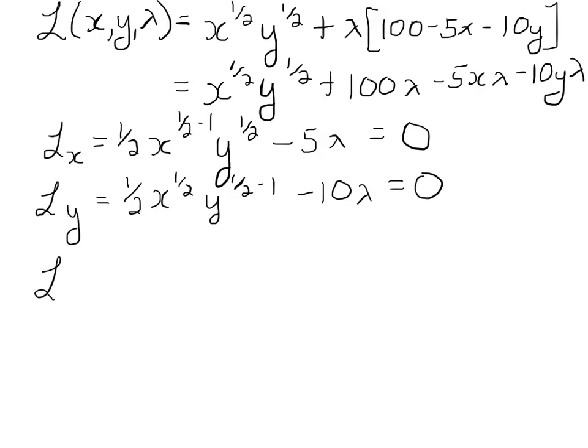When we take the derivative with respect to lambda, we hold everything but lambda constant. In this first piece, there's absolutely no lambdas, so that piece becomes 0. In each of the following pieces, we just have the components of the budget constraint. Thus, this derivative is just 100 - 5x - 10y, and we set this equal to 0. We can confirm our answer because the budget constraint has been recovered. Notice we have three equations with three unknowns: x, y, and lambda, and lambda does not appear in this final equation.